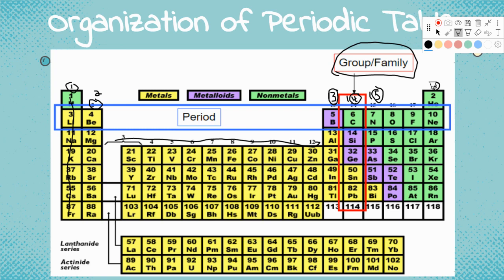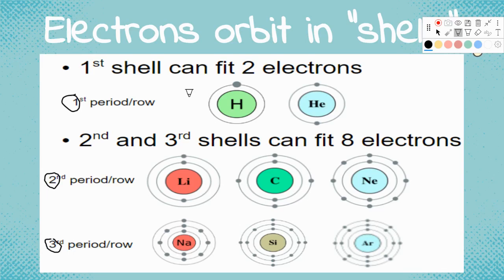The outer electrons are especially important when it comes to one atom bonding with another. So again — periods: first period has one shell, second has two, third has three, fourth has four, and so on. Groups or families: the number on top tells you how many electrons they have on their outermost shell. Here you can see this one is in the first column and only has one electron on its outer shell, and this one is also in the first column because there's only one electron on its outer shell.